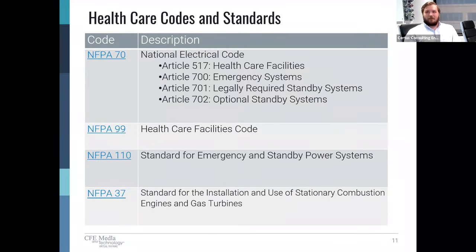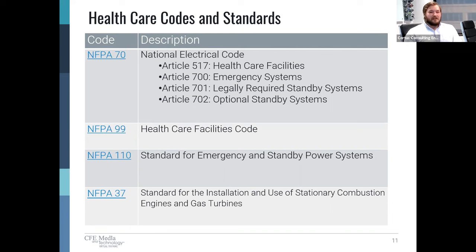First, we're going to review which codes are applicable. The first one is NFPA 70, also referred to as the National Electrical Code or the NEC. Articles 700, 701, and 702 deal with emergency power in general — these are the emergency systems codes for other building types — whereas Article 517 deals with healthcare facilities specifically. We have to take all these into account when we're designing this.